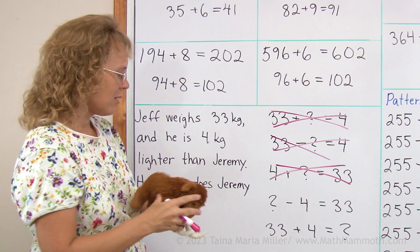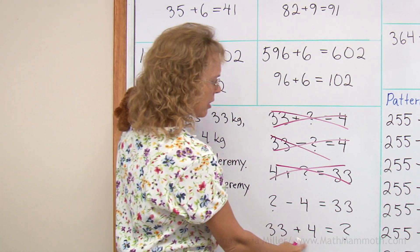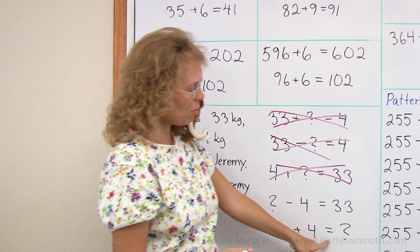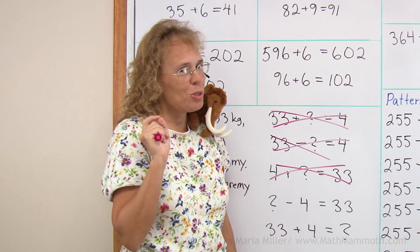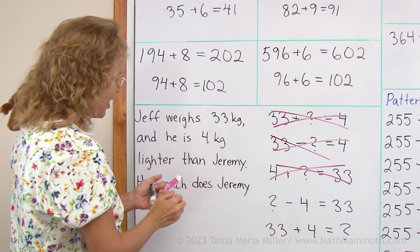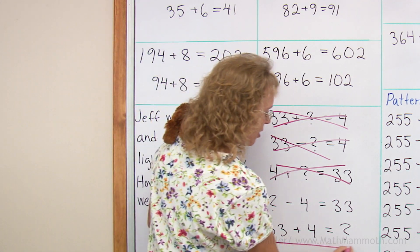Oh well, let's try the last one. 33 plus 4 equals 37. And that's the right answer, right? I'm sure you already figured that out. 37 is the right answer. So this works.